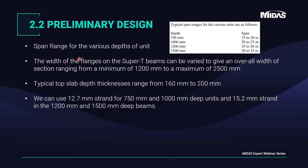For preliminary design, here are some general provisions. The span range for various unit depths: for a span around 28 meters we can use Type 3 which is 1200 mm depth Super T. The flange width can be varied to give an overall section width ranging from minimum 200 mm to 2500 mm. Typical top slab deck thickness ranges from 160 to 200 mm. For 750 and 1000 mm Super T's we can use 12.7 mm strands, and for larger depths we can use 15.2 mm strands.